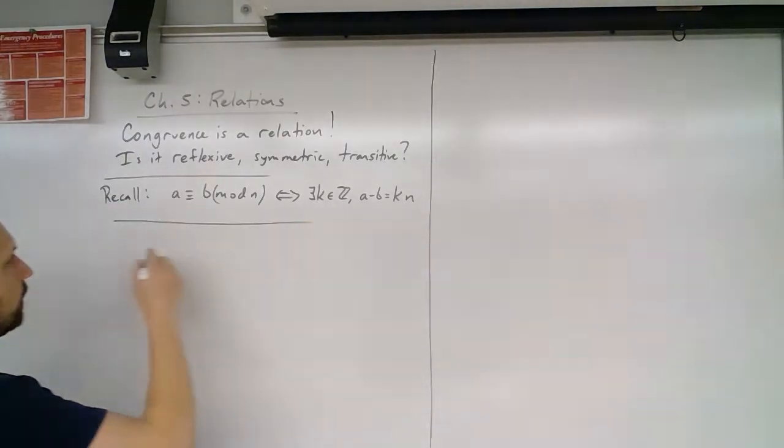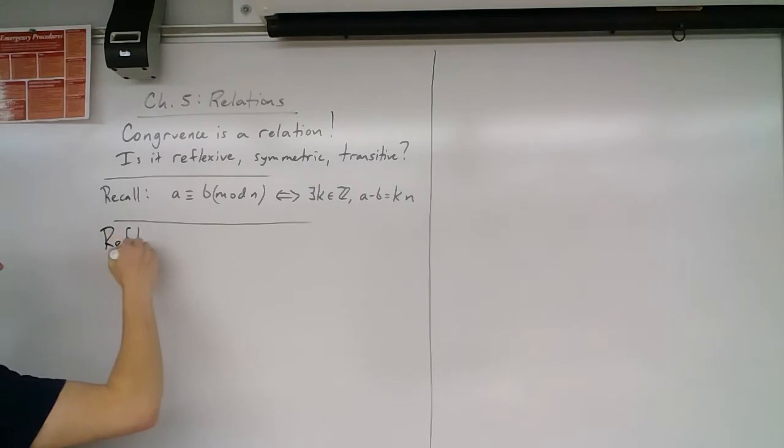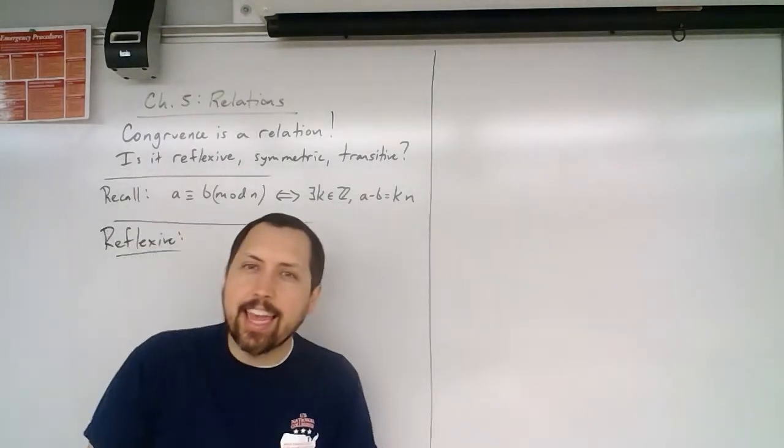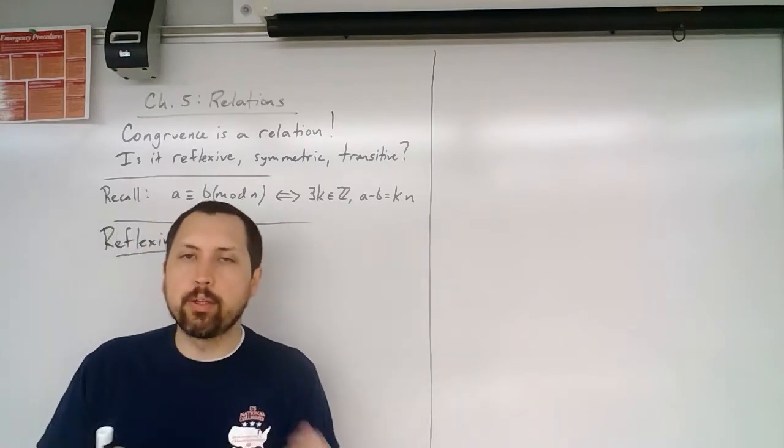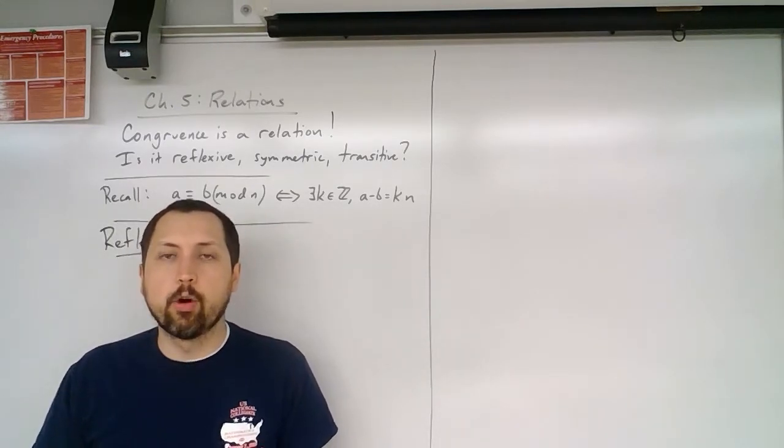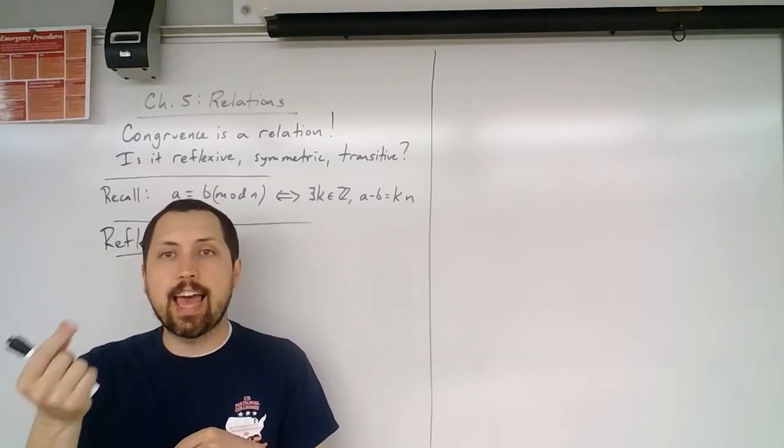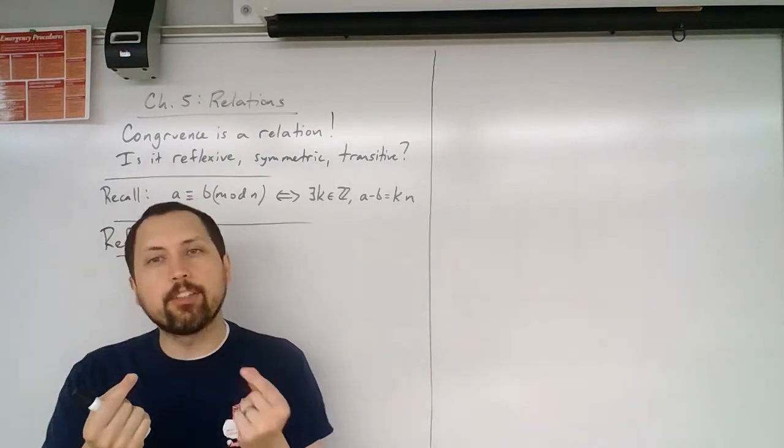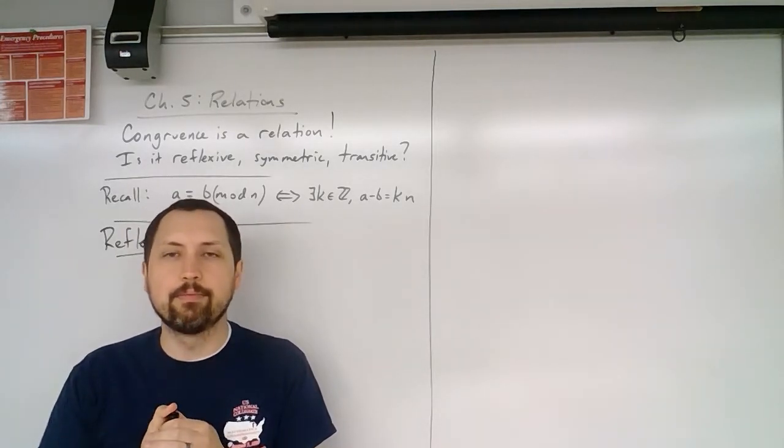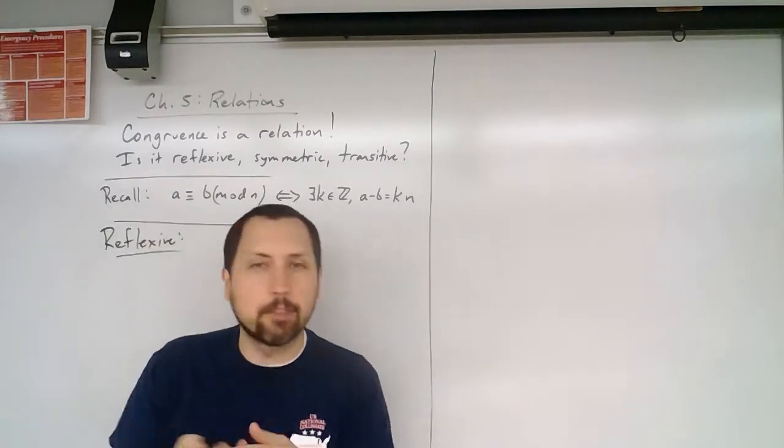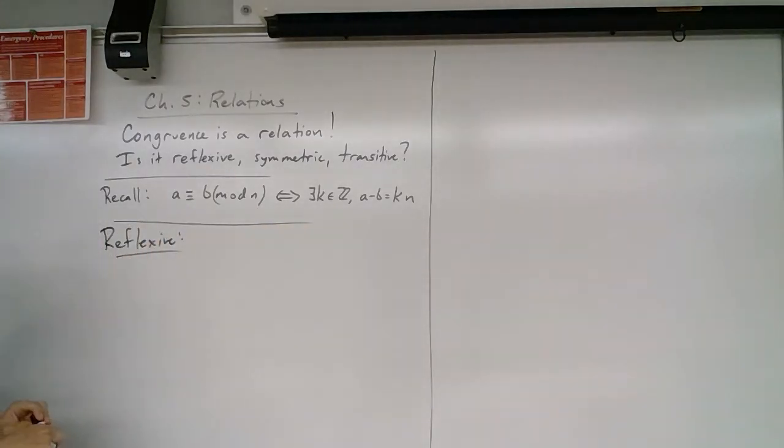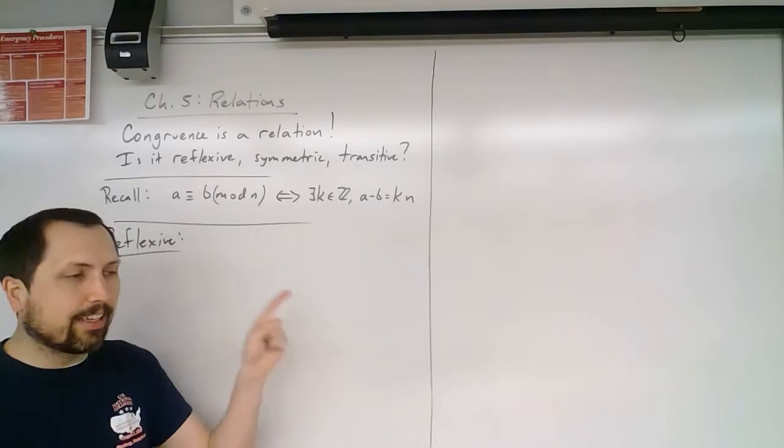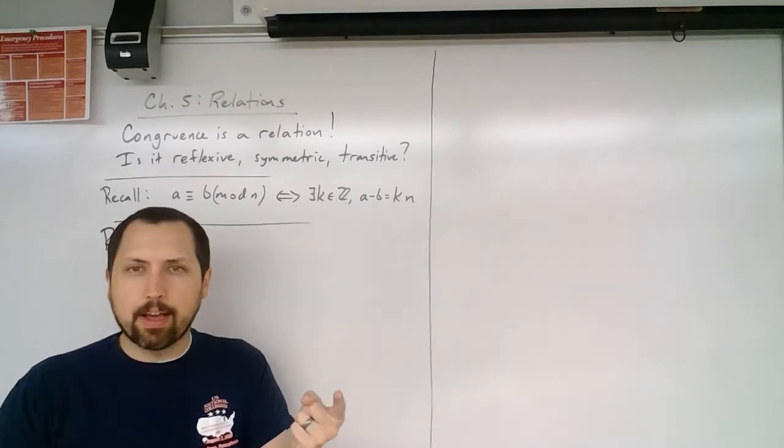Alright, so if we take a look at some of these, let's look at reflexive. The question is, is a number congruent to itself mod n? Or in other words, does that number have the same remainder when we divide it by n as itself? Well, yes, right? That seems to be fairly obvious, hopefully, that a has the same remainder as a when you divide it by n.